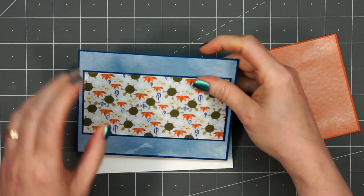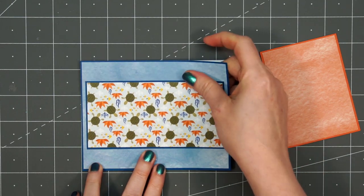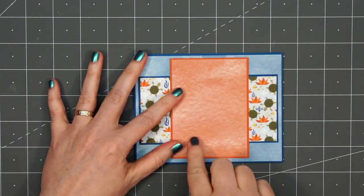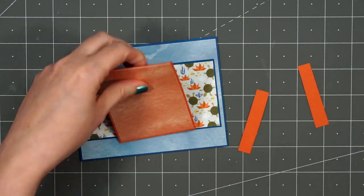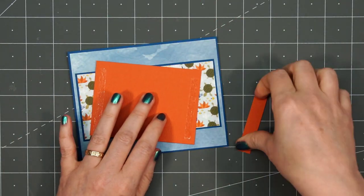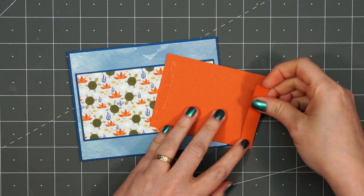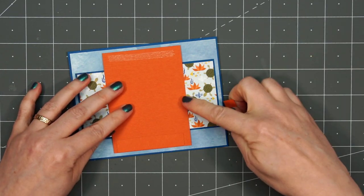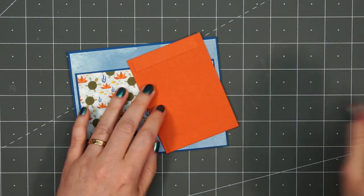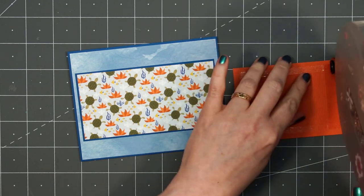For this card, I won't have any of the white card base showing. I'm also not following the sketch measurements exactly. Instead of the fourth of an inch for those matted layers, I switched it to an eighth of an inch. I prefer the thinner layer, but if you like that wider matted layer, you can definitely use that fourth of an inch.